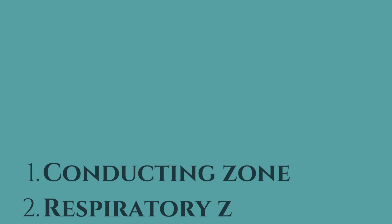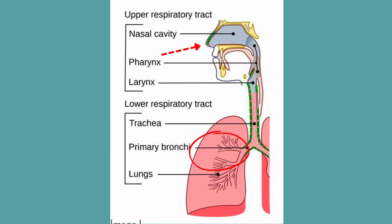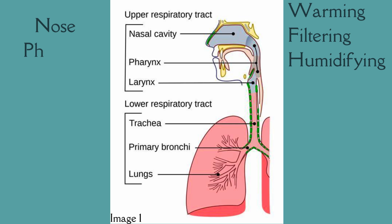In short, the respiratory system is functionally divided into conducting and respiratory zones. The conducting zone starts from the nose and extends to the terminal bronchioles. In this part, there is no exchange of respiratory gases — it is only responsible for warming, filtering, and humidifying the breathing air.